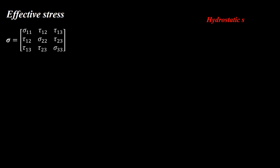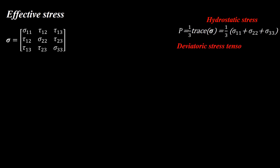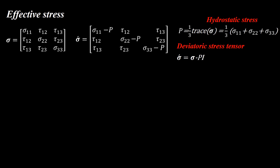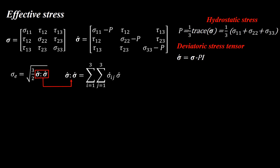To define the Mises effective stress, consider the most general form of the stress tensor. Based on experiments, plasticity of metals does not depend on hydrostatic stress. The hydrostatic stress is defined as the summation of the three normal stresses — or the trace of the stress matrix — divided by three. The plastic behavior of metals depends on the deviatoric stress tensor, which is calculated by subtracting the hydrostatic part. Using the deviatoric stress tensor, the Mises effective stress is then defined.